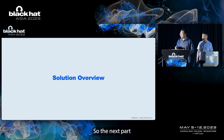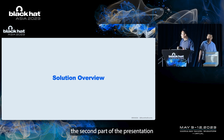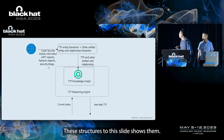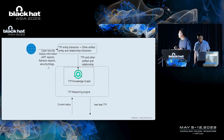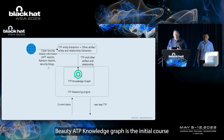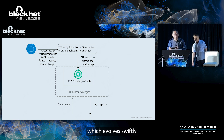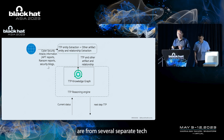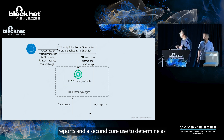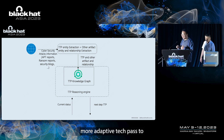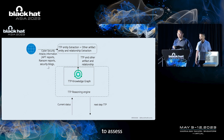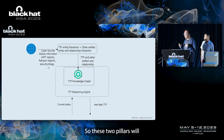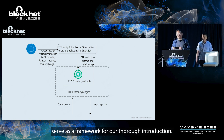The second part of the presentation is the overview of our solution. This slide shows a general overview of our two main cores. Building a TTP knowledge graph is the initial core, which involves swiftly and automatically extracting TTPs and associated artifacts from cyber attack reports. The second core is to determine more adaptive attack paths to assess the actual situation of the target organization. These two pillars serve as a framework for our thorough introduction.